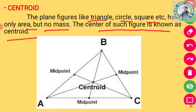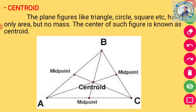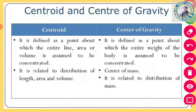तो जैसे triangle का centroid निकालना है, तो midpoint of the opposite side को vertex से मिला देते हैं, और जो point मिलता है — that is the centroid point.